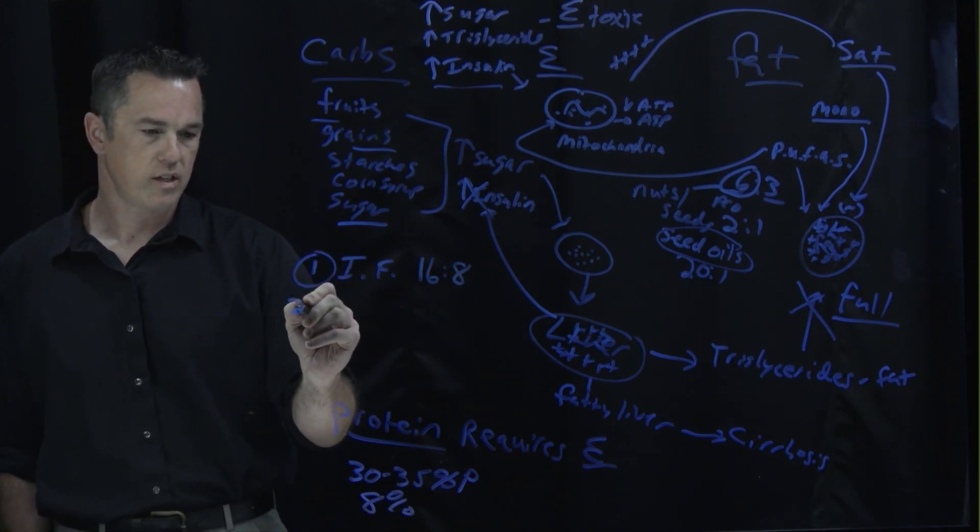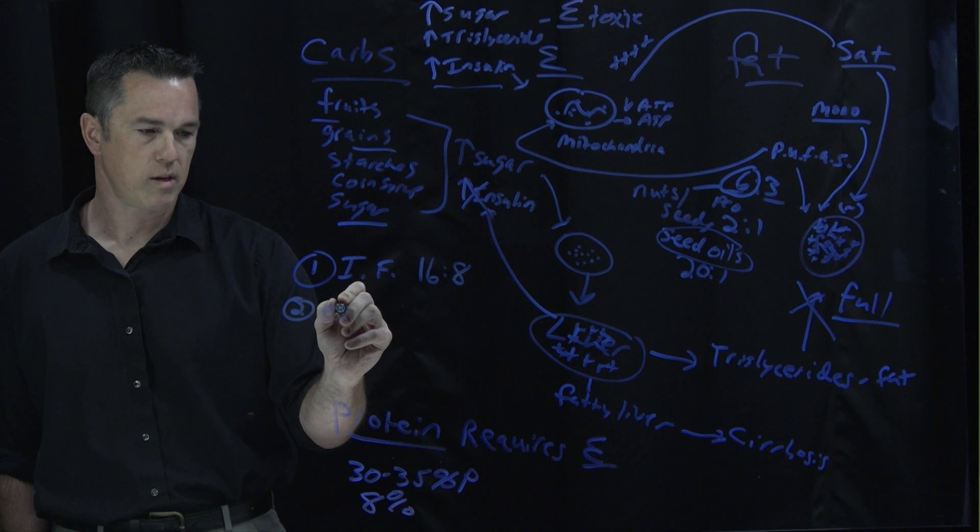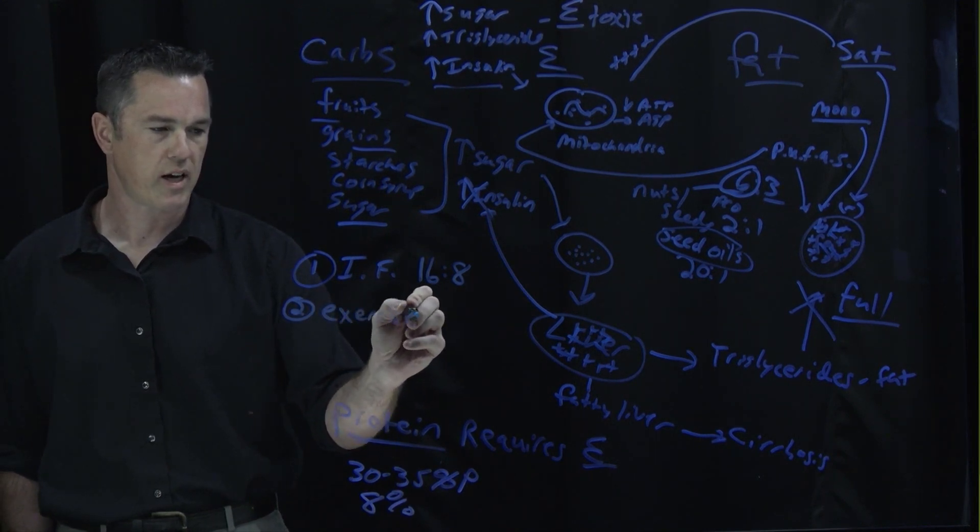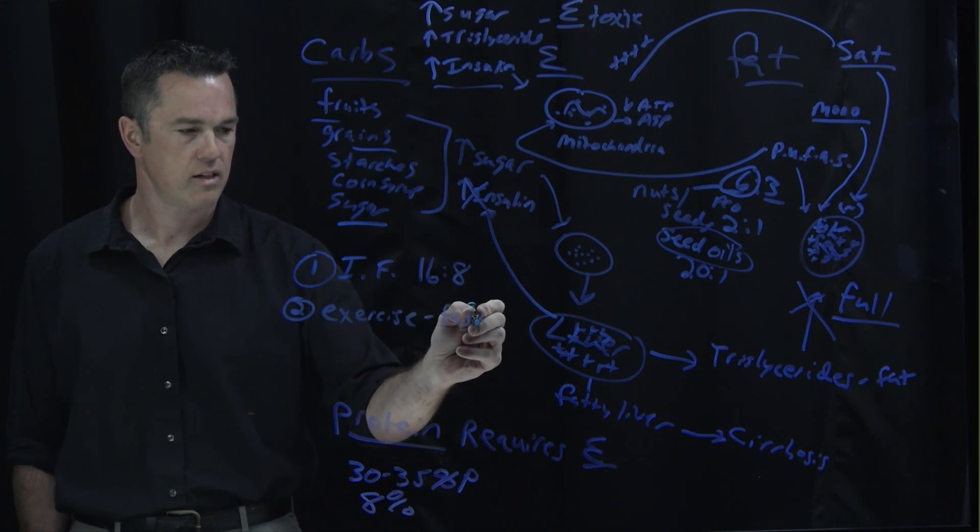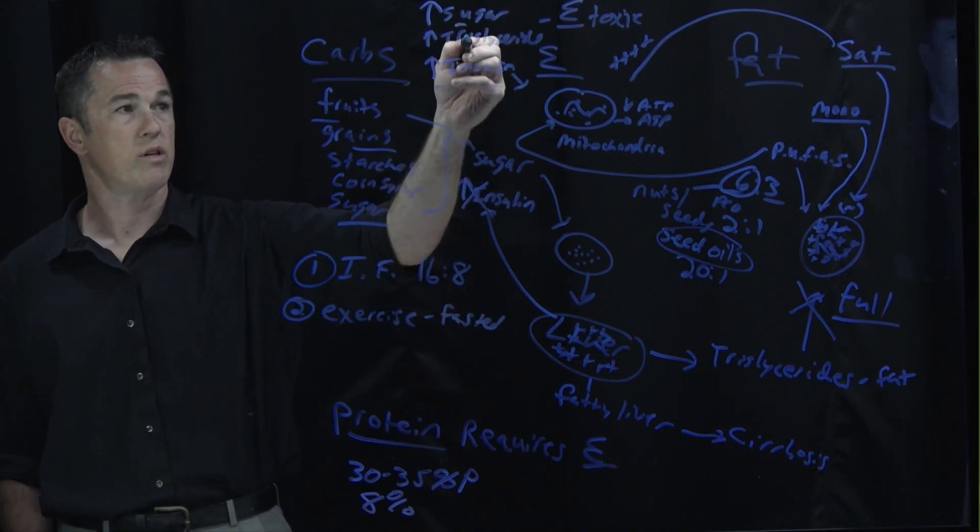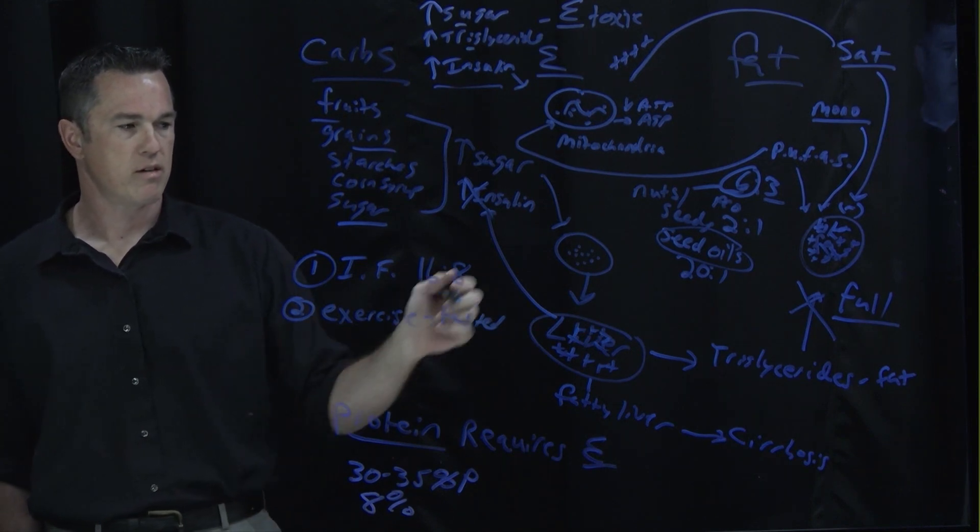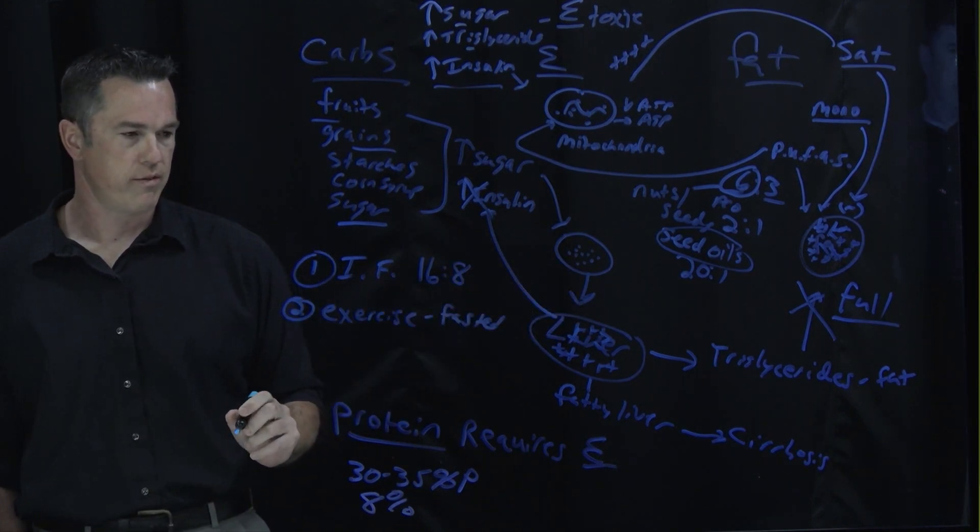Number two is exercise. Exercise is great. It doesn't really generally make people lose a lot of weight. Most people are just fighting the calories they're eating. If you can train yourself to exercise fasted, well now you're going to burn the sugar and fat out of your blood and maybe start dipping into your liver and fat cells.